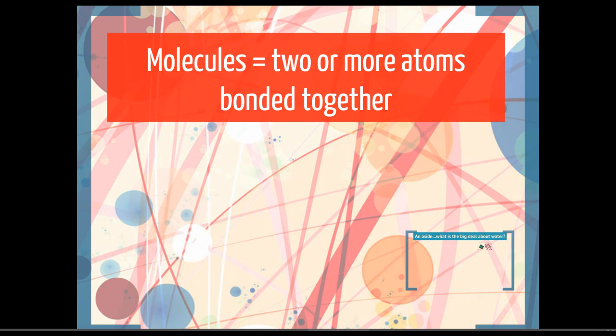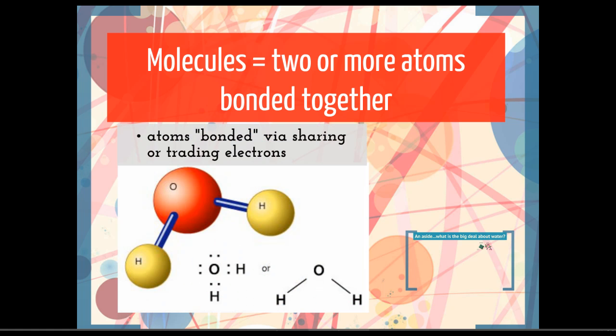A molecule is two or more atoms bonded together. When you take two or more atoms and bond them together, the bonding is going to happen using the electrons. So electrons are going to be shared, or one atom is going to take the electrons, the other one is going to give them away, and they're going to stay associated with each other.